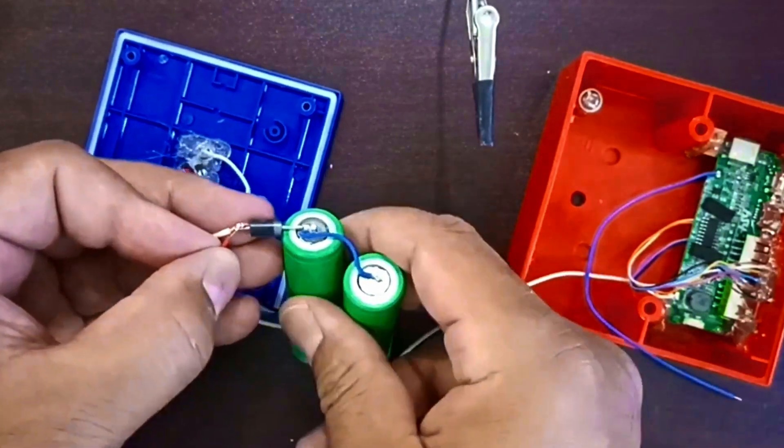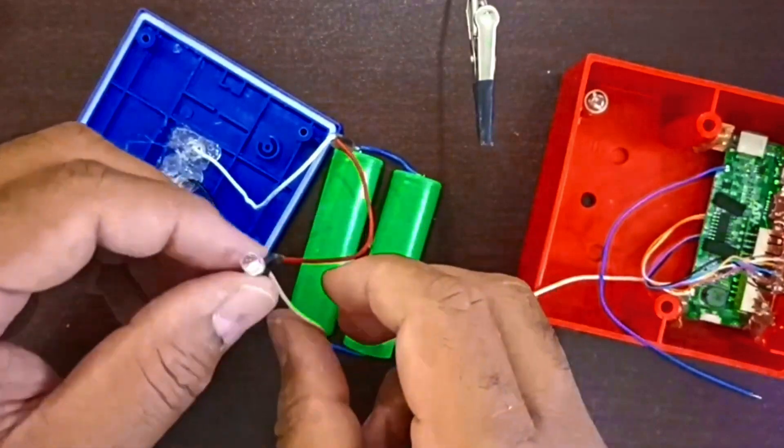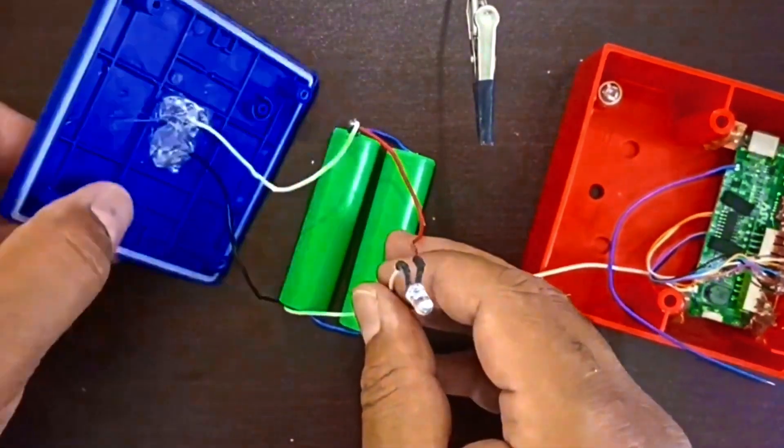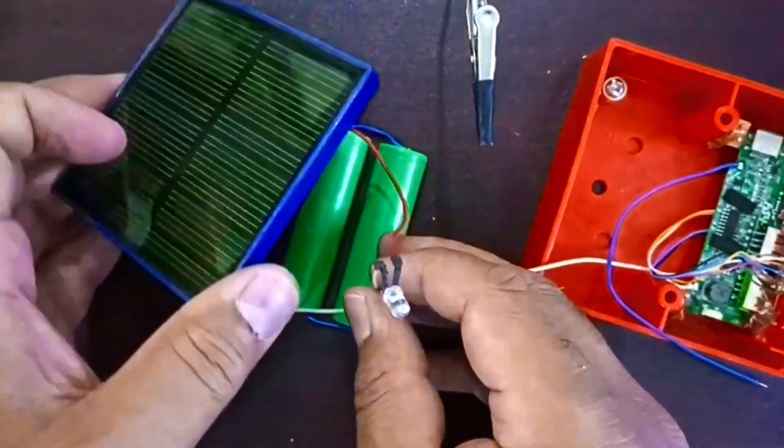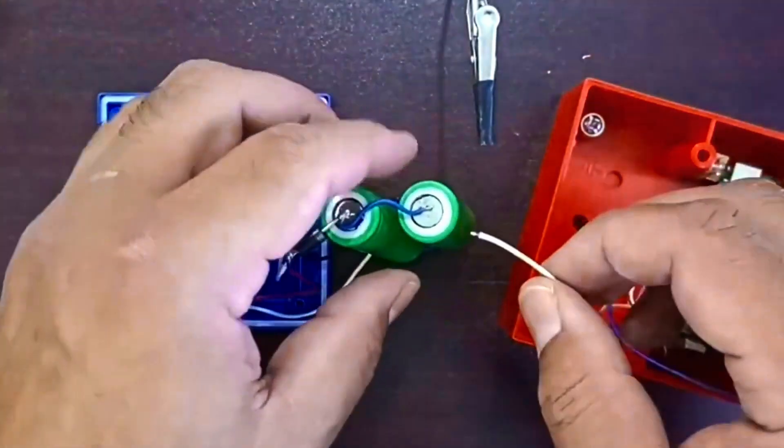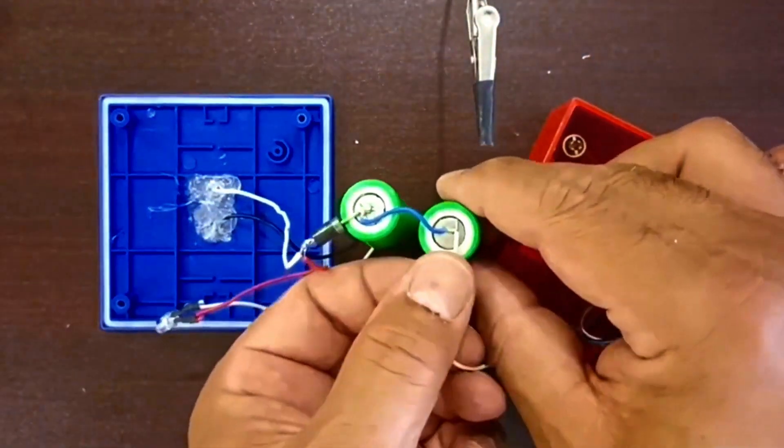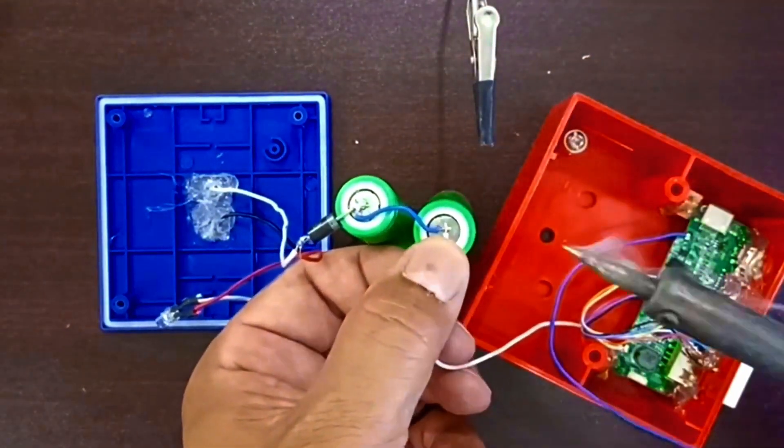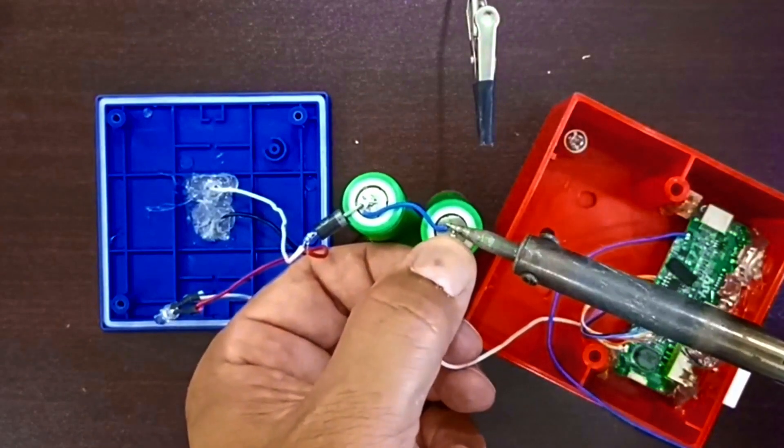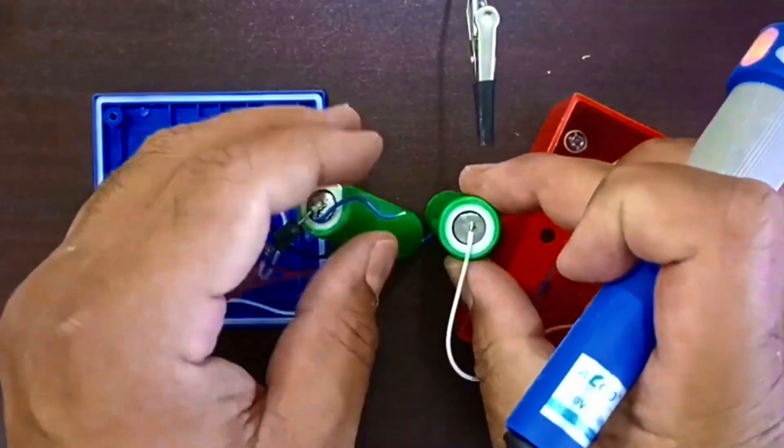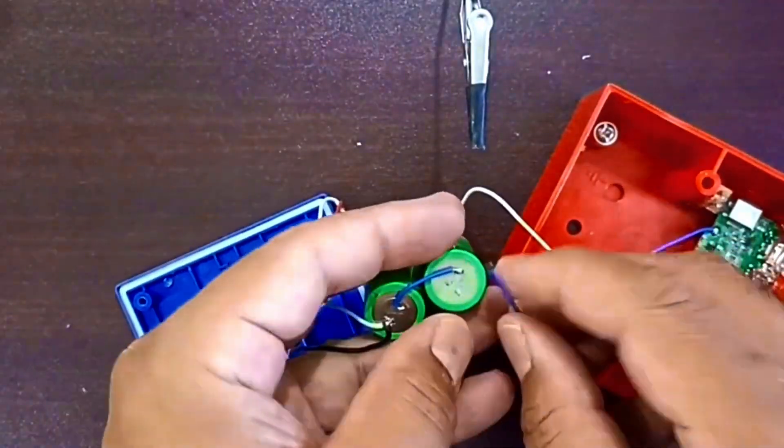Now the solar and battery wiring is ready, looking nice and neat. Soldering battery positive to B plus, double checking for shorts. Battery negative to B dash, and that's our main wiring done.